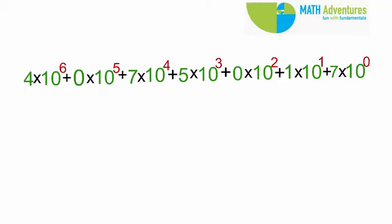Now, suppose you are given the expanded form of a number: 4 into 10 to the power of 6 plus 0 into 10 to the power of 5 plus 7 into 10 to the power of 4 plus 5 into 10 to the power of 3 plus 0 into 10 to the power of 2 plus 1 into 10 to the power of 1 plus 7 into 10 to the power of 0. Can you find the number?